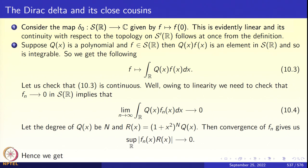The Dirac delta is a map from S(R) to C given by f ↦ f(0). The input is the Schwartz function f(x) and the output is simply the value at the origin. This is evidently continuous: if fn converges to f in the Schwartz topology, fn converges to f uniformly in particular, so fn(0) converges to f(0) straight away. So the Dirac delta is a continuous linear form on S(R) — a basic example of a tempered distribution.